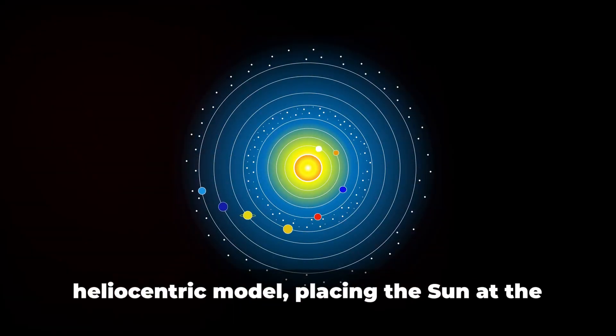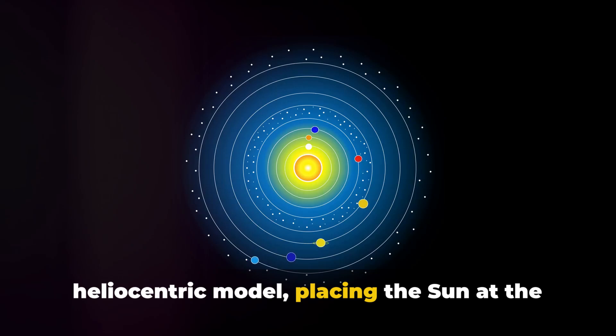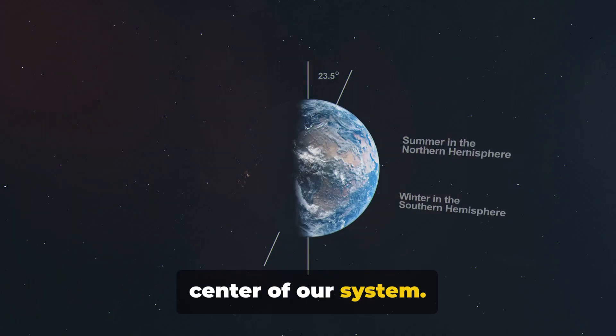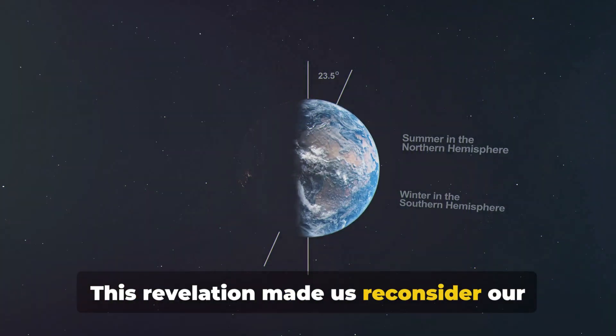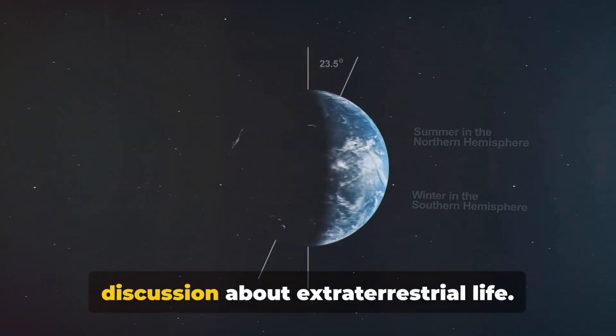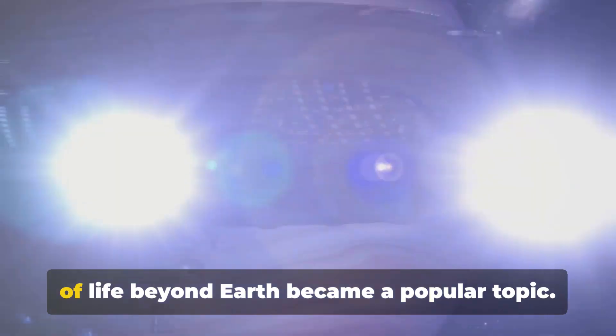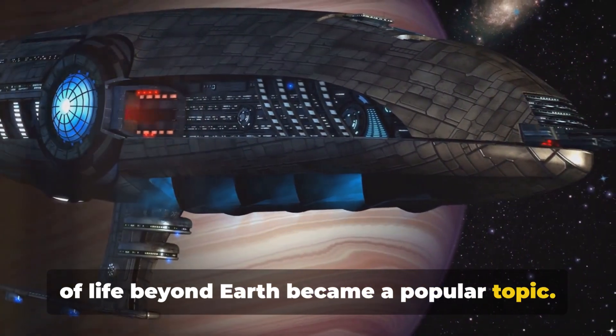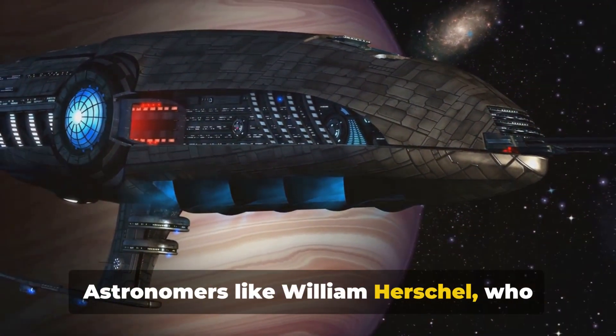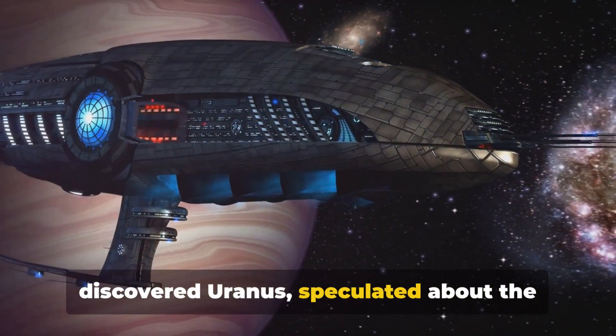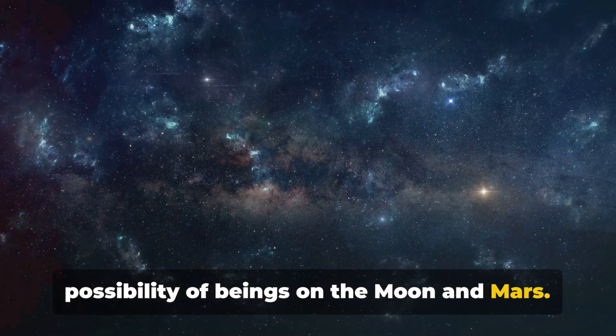Nicholas Copernicus proposed the heliocentric model, placing the Sun at the center of our system. This revelation made us reconsider our place in the cosmos and re-opened the discussion about extraterrestrial life. By the 19th century, the prospect of life beyond Earth became a popular topic. Astronomers like William Herschel, who discovered Uranus, speculated about the possibility of beings on the Moon and Mars.